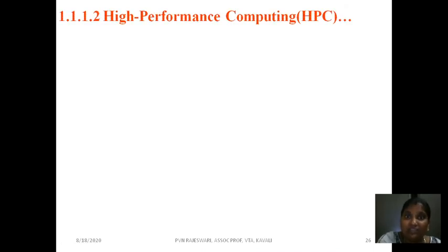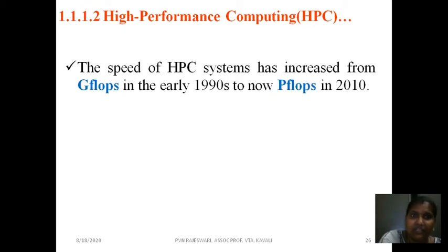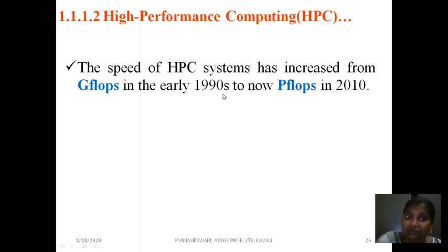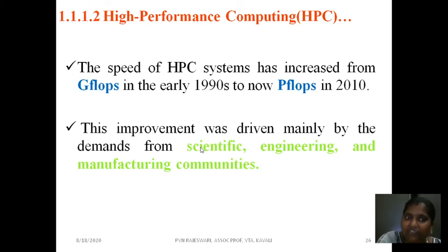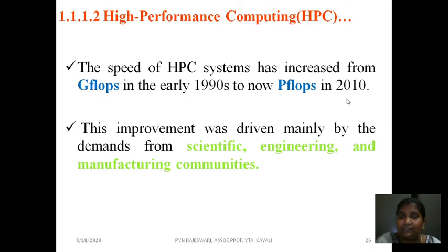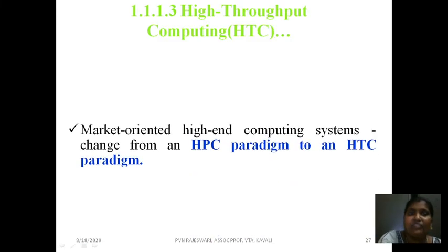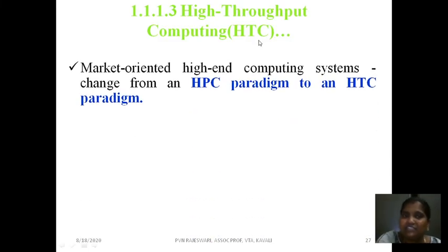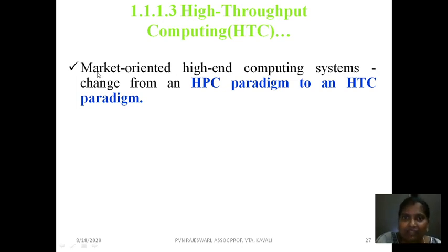High performance computing: the speed of HPC systems increased from gigaflops to petaflops since 1990 — from giga to peta. HPC is useful in scientific, engineering, and manufacturing fields everywhere. Around 2010, HPC was sufficient, but now in 2020 HPC is no longer sufficient, so we have to make a move to HTC. HTC is going to rule the market through utility computing — you pay and use.